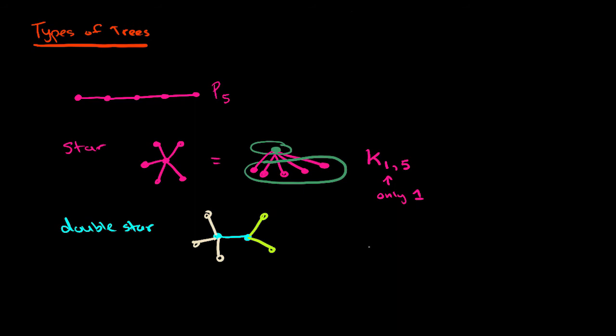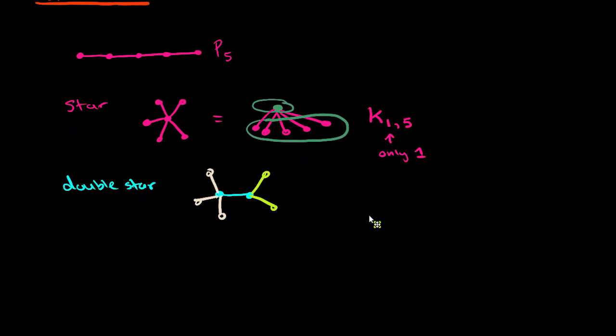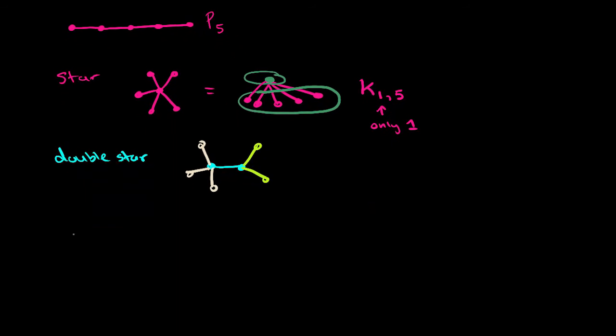And another really fun type of graph, mostly fun because its name is so cool. It's a type of a tree. It's called a caterpillar and it just looks something like this. I'll just draw an example. So here we have some sort of path like this.